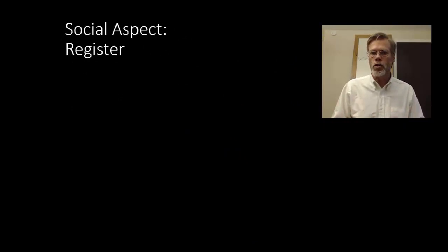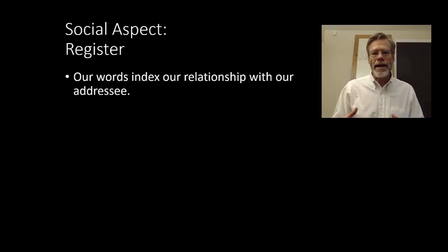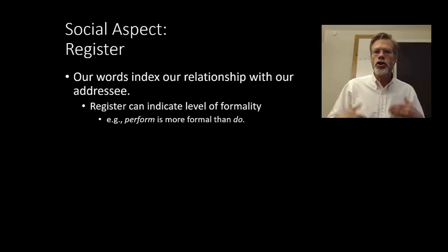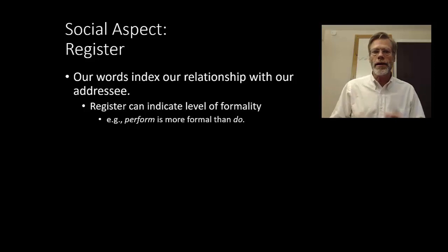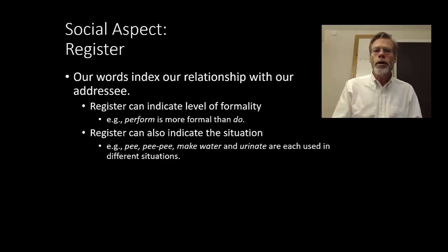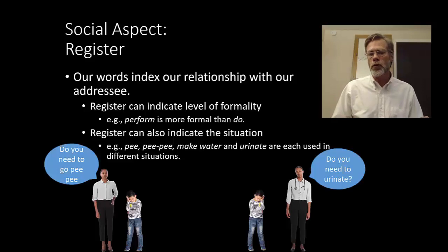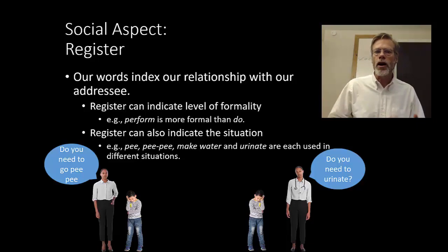Another aspect of social meaning is register, which has to do with the level of formality. Our words index our relationship with our addressee. When writing an academic paper, the expectation is formality, so we signal that with our word choices — choosing 'perform' rather than the informal 'do.' Register also indicates a situation: certain situations call for certain words. For example, 'PP' is highly restricted to conversations involving children, whereas 'urinate' tends to appear in clinical situations like a classroom or a doctor's office.